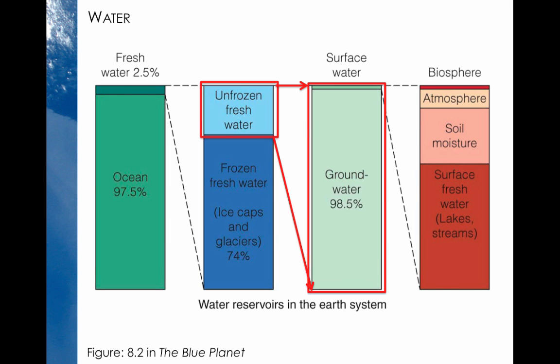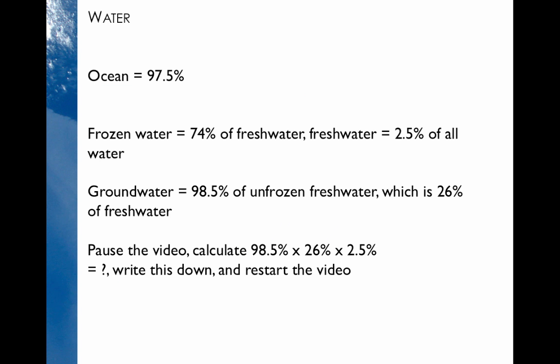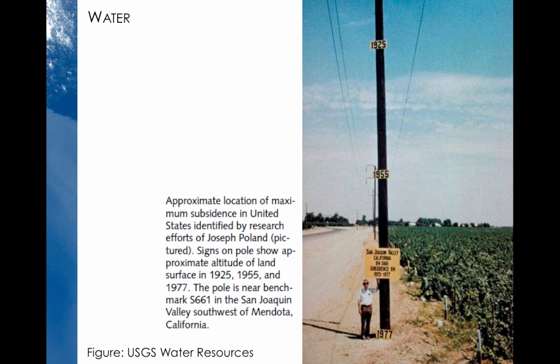Let's pause the video again and calculate how much of Earth's water is in groundwater — it's 98.5% of 26% of 2.5%. Groundwater is very important in California and around the world as a source of drinking water and irrigation water. This picture shows the height of the land surface in different years on a telephone pole in Mendota, showing that the land surface has dropped by about 30 feet over several decades because an enormous amount of water has been pumped out of the ground.